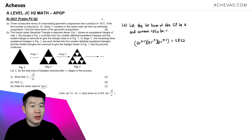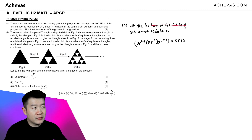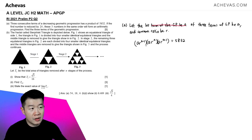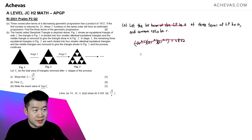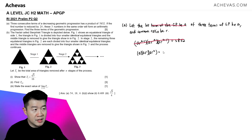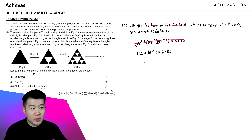What if we let the first of the three terms of the GP be A instead? I'm going to redefine A: let the first of the three consecutive terms be A and the common ratio be R. That means the next term is A times R, and the third term is A times R squared. If we multiply all three terms together, this also equals 5832. Now we have one less unknown — we have eliminated N. So we have A cubed times R cubed equals 5832.